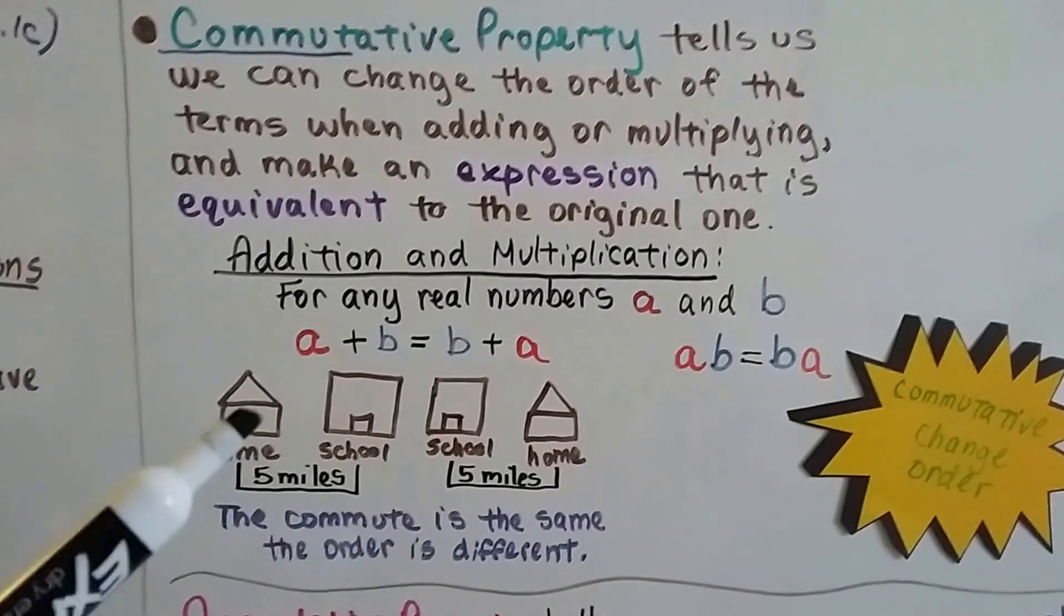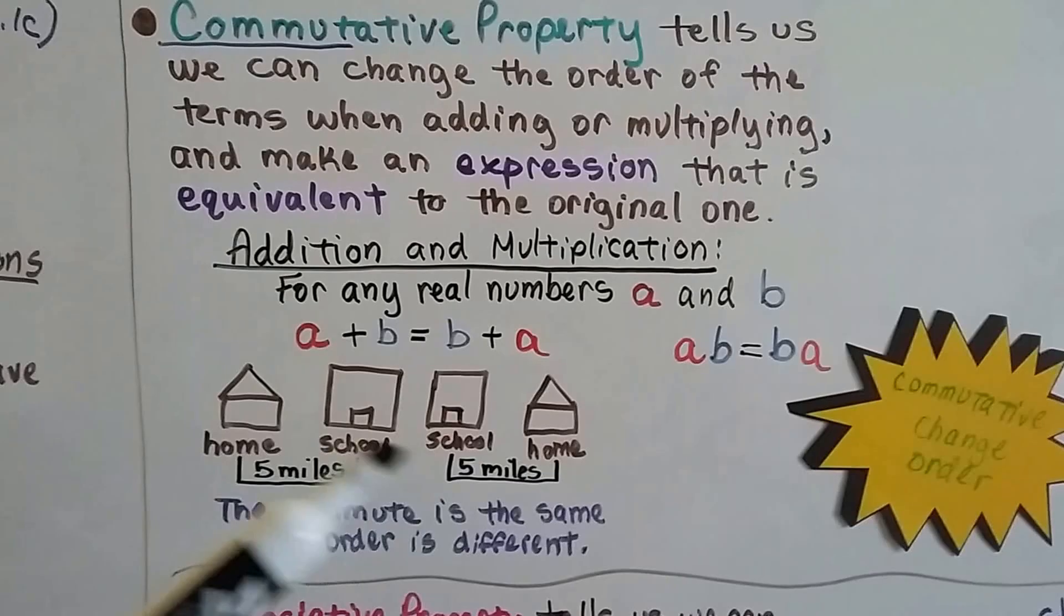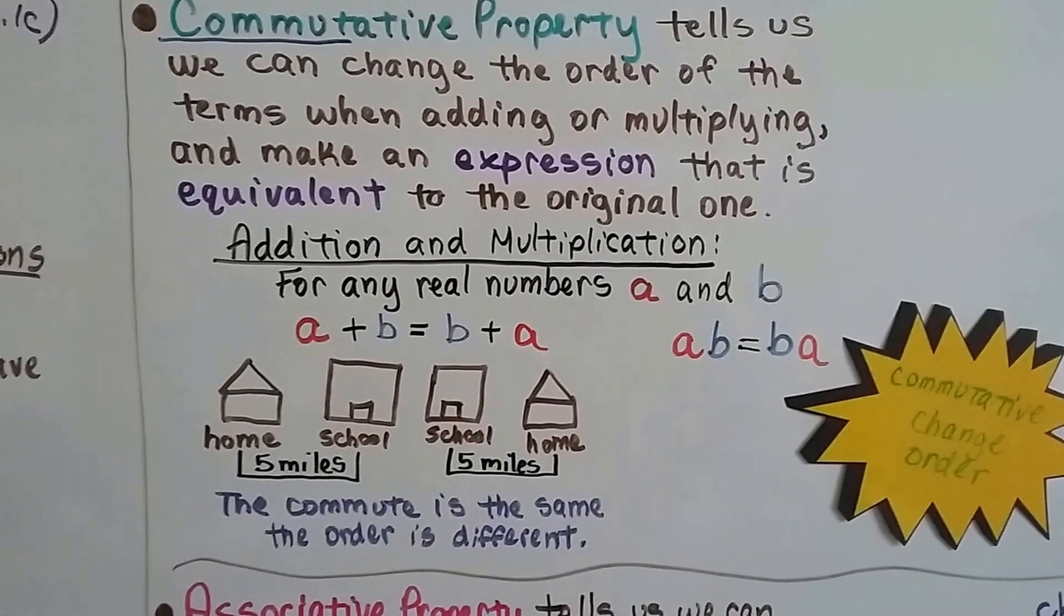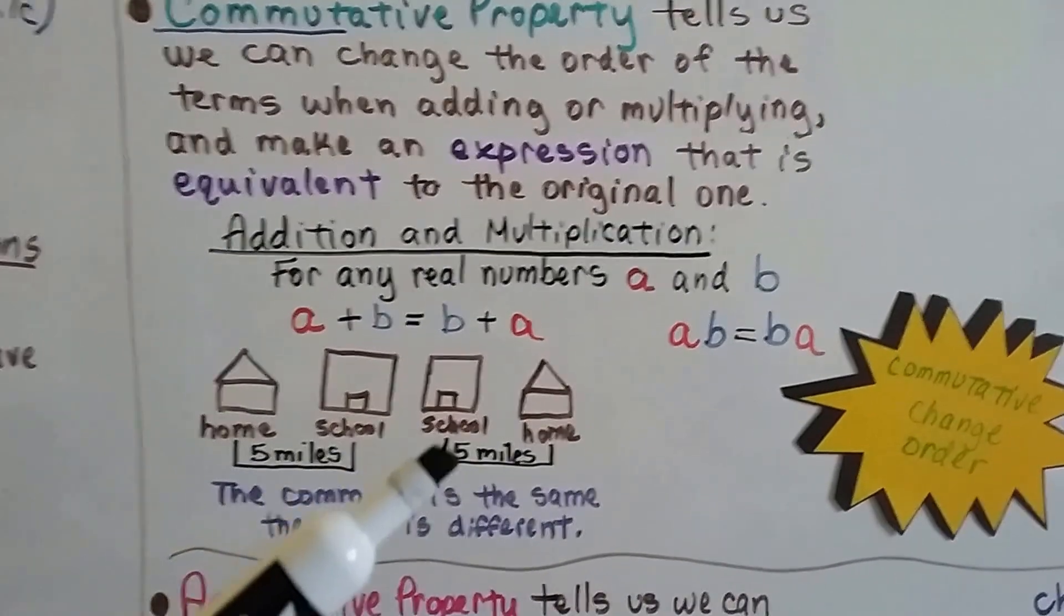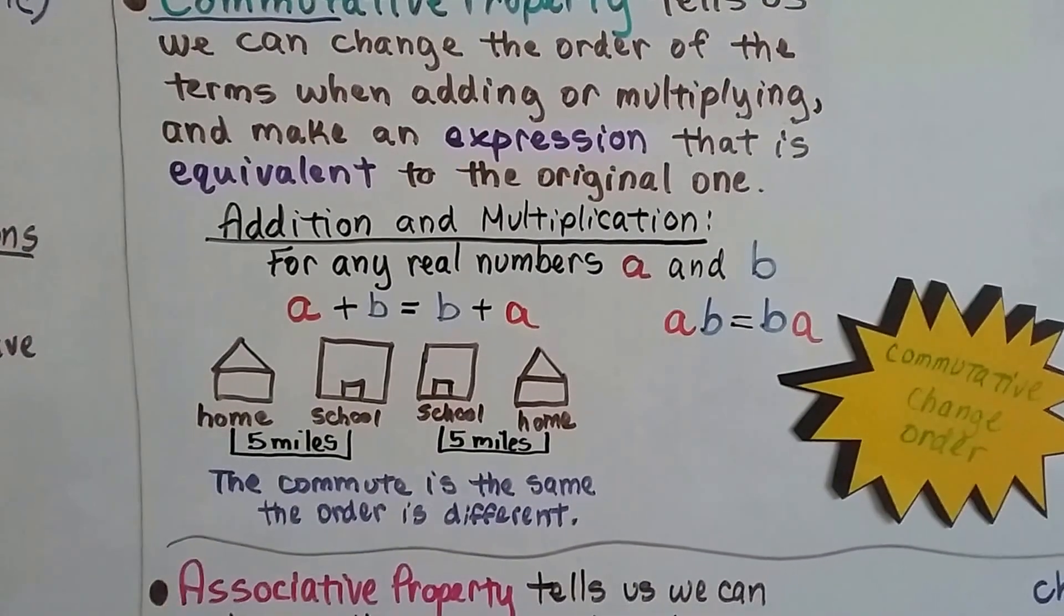you're going to go five miles to go home. It doesn't matter the order. It's the same equal amount. The commute is the same from home to school as it is from school to home. It's just the order is different.